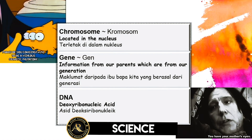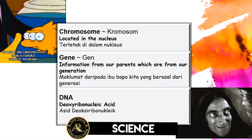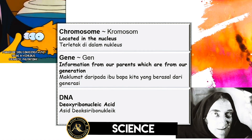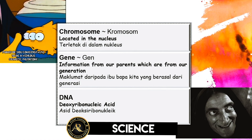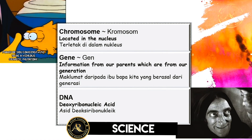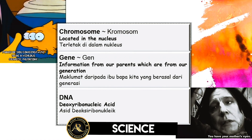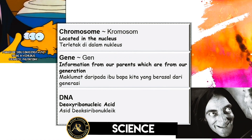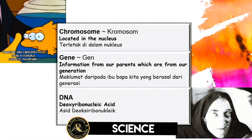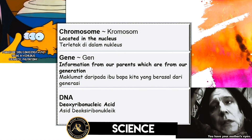If you remember, we have cells — we've got plant cells and animal cells, cell haiwan and cell tumbuhan. And inside the cell, the nucleus is the place where it controls all cell activities. So chromosome is actually determining what the control factors are.